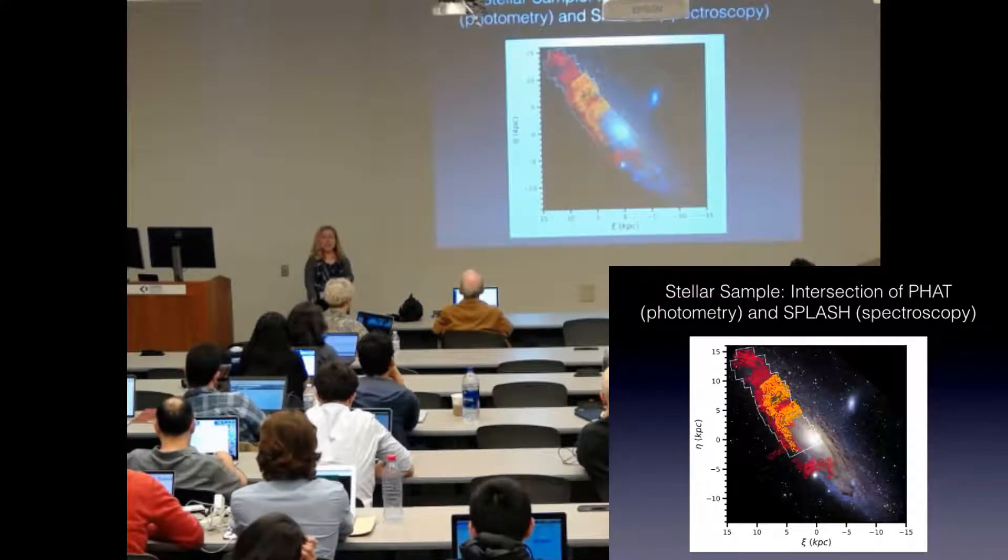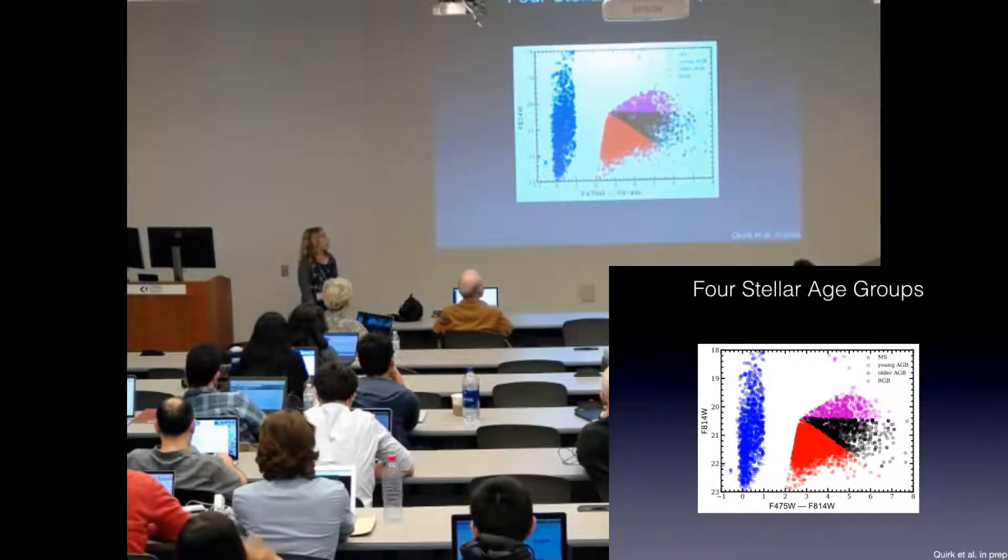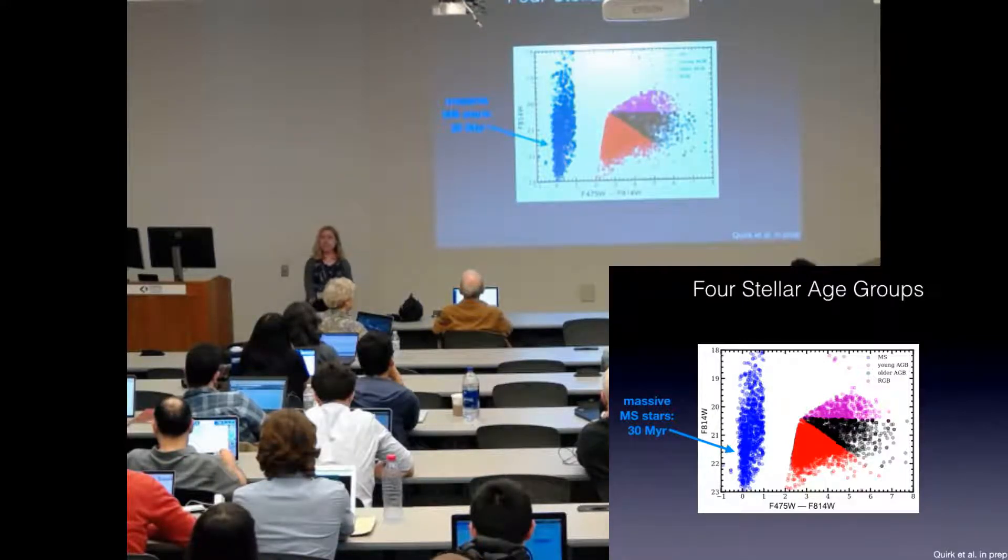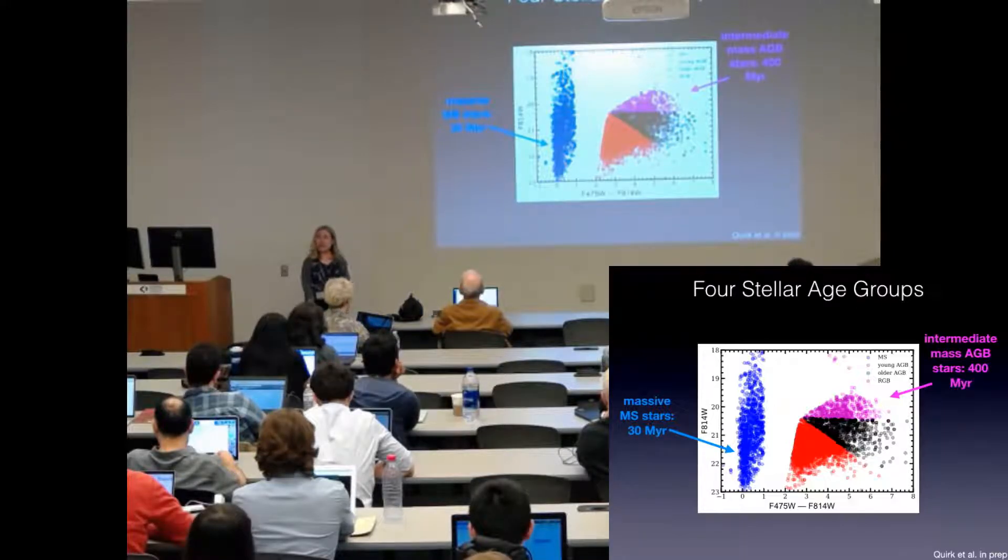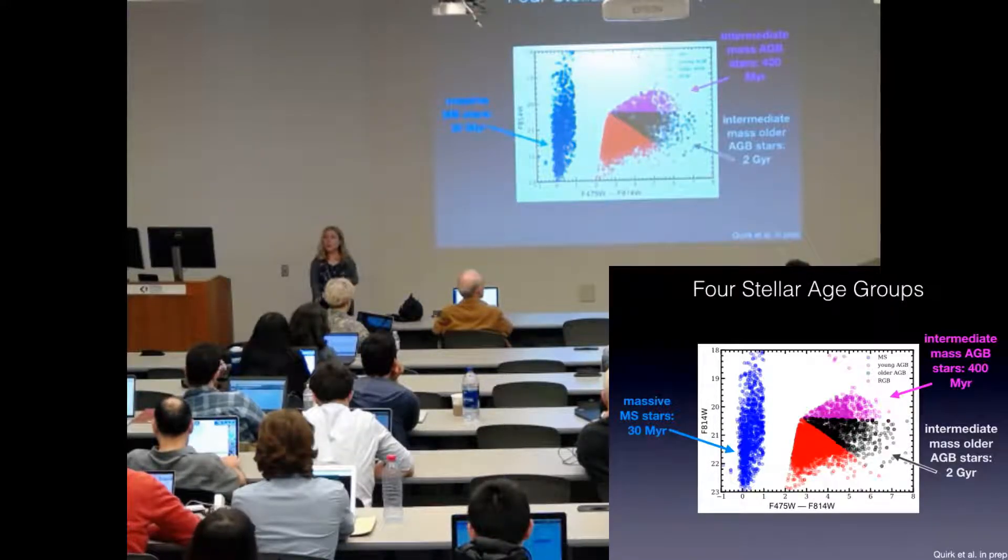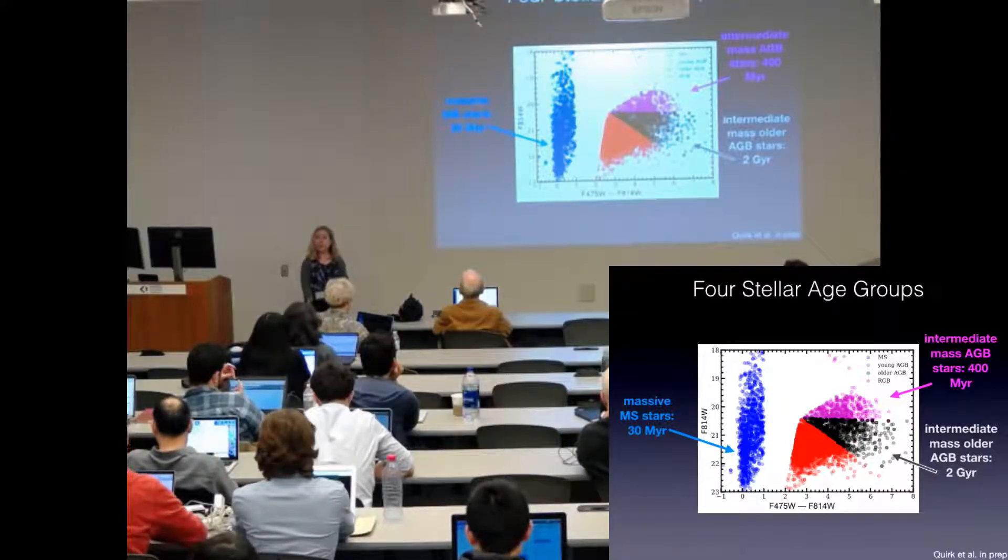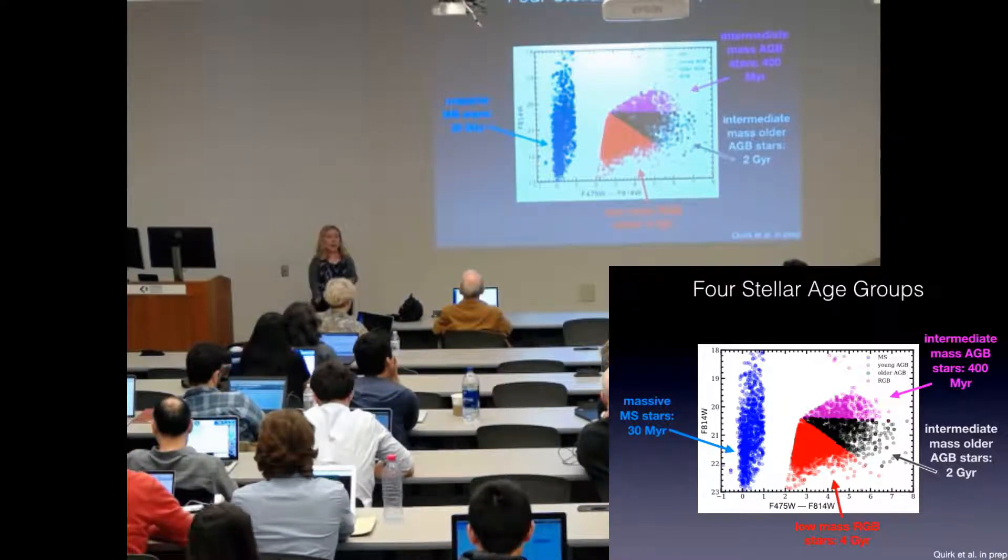I've divided this stellar population into four groups based on average stellar age. The first: low high mass short-lived main sequence stars with an average age of 30 megayear. Then intermediate mass AGB stars with an average age of 400 megayears. Older also intermediate age AGB stars with an average age of two gigayear and low mass RGB stars with an average age of four gigayear.